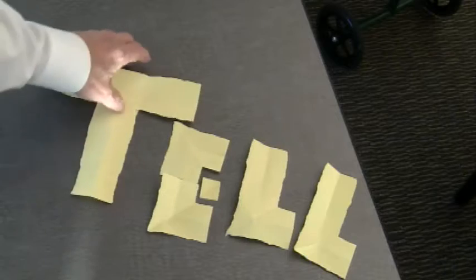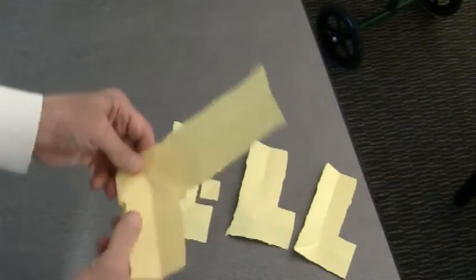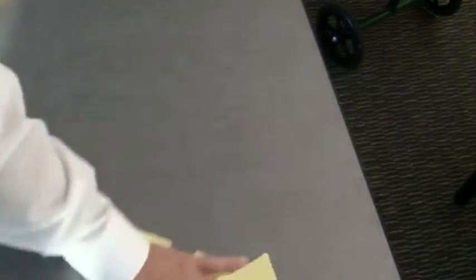They can see that we need to tell of the savior's love. Last but not least, we take that cross that was the T and we make it look like an L.